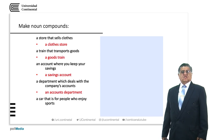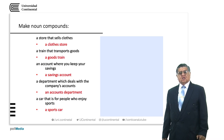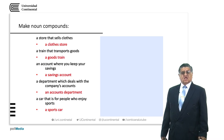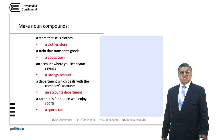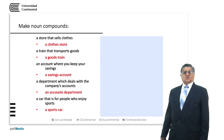A car that is for people who enjoy sports: 'a sports car'. Again, to emphasize — to give more information about the type of car, we say 'a sports car'. The 'a' is for 'car', not for 'sports'.